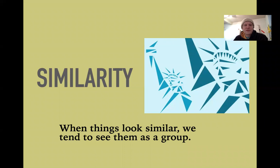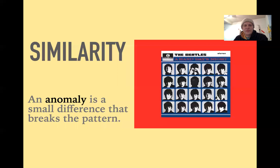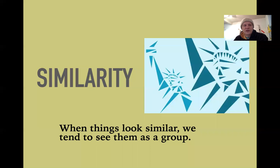The first of these theories — and all of these will be things you'll notice you're already familiar with — is similarity. When things look similar, we tend to see them as a group. We see the two Statues of Liberty as part of a grouping, not two isolated different pictures. Things that don't look like the other things stick out from the group. An anomaly is a small difference that breaks a pattern, and we saw a student work example where an anomaly was used to add interest.